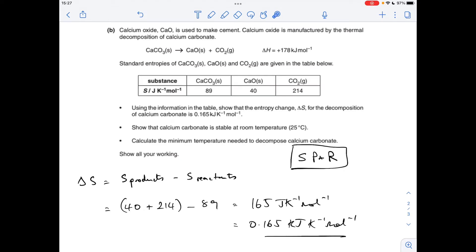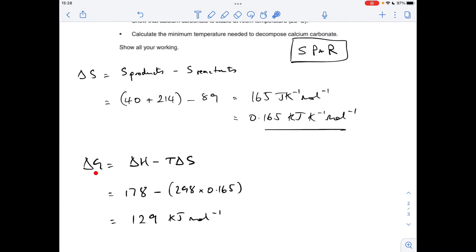Second bullet point: show that calcium carbonate is stable at room temperature, 25 degrees C. Basically, we need to calculate delta G for this reaction, the Gibbs free energy change. If it's greater than zero, that means this reaction isn't feasible at that temperature. Obviously, what is the reaction? It's the decomposition of calcium carbonate. If that's not feasible at 25 degrees C, that means calcium carbonate is not going to decompose and therefore it's stable. So there's the calculation for the Gibbs free energy change. Delta G equals delta H minus T delta S. Delta H was given for the equation, remember that's in kilojoules per mole. The temperature has to be in Kelvin, so 25 degrees C needs to go to 298 Kelvin.